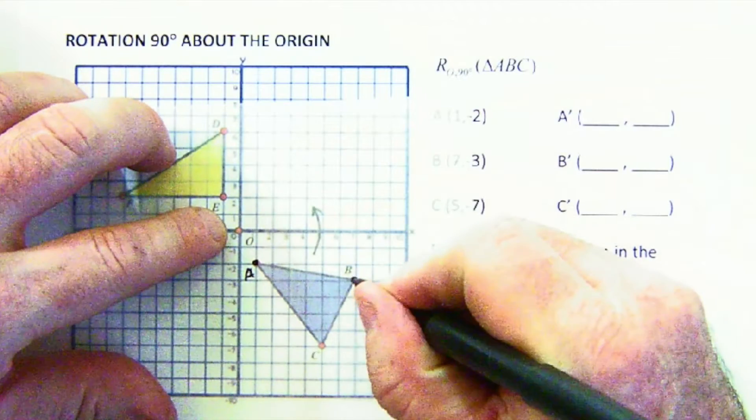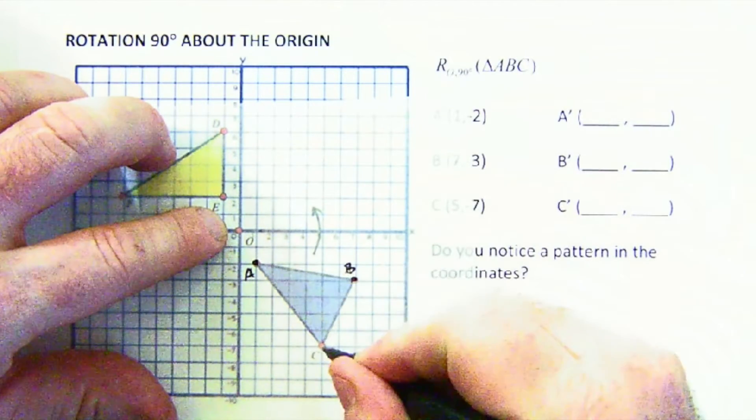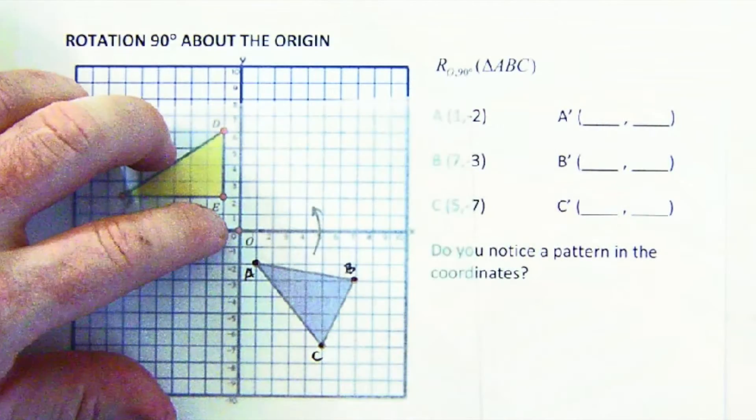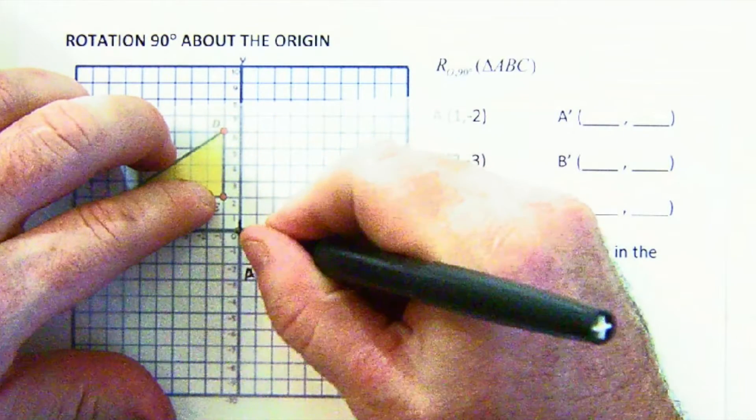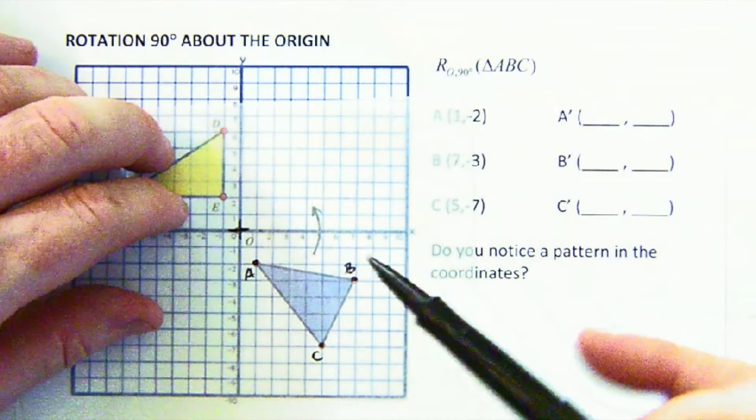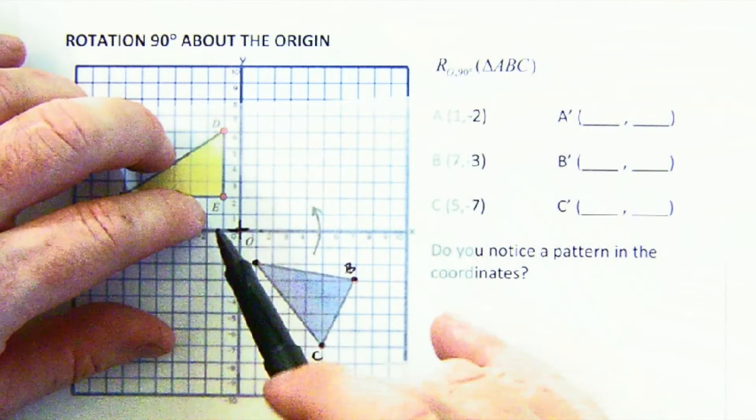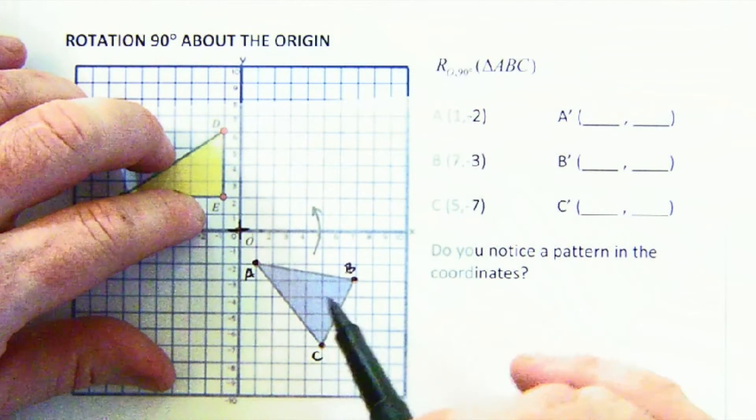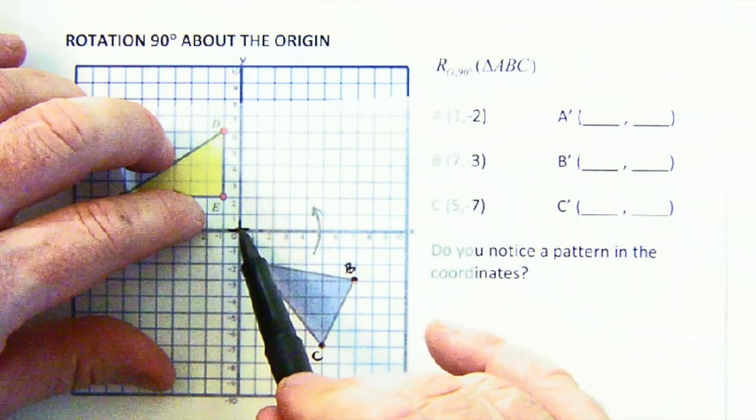To help me I'm going to use patty paper. Now patty paper isn't named after Mike Patterson, although it should be. It's named after the hamburger patties that it fits in between. That's where patty paper comes from.